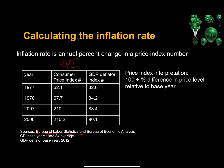Now the GDP deflator, which you may also be familiar with, is a price index that includes all goods and services included in GDP. This price index is calculated by the Bureau of Economic Analysis. As you can notice here, these base years are different. So briefly, let's interpret these numbers.